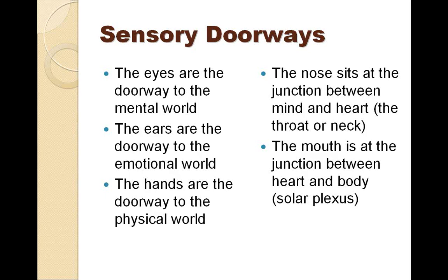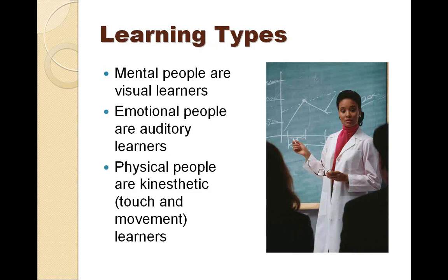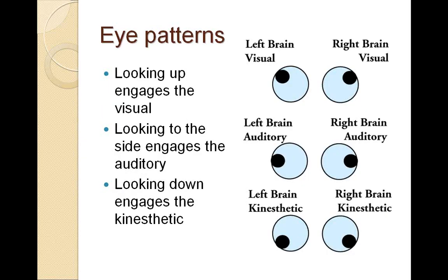You have two eyes, one nose, two ears, one mouth, and two hands — that pattern is the pattern of the tree of life. The eyes are the doorway to the mental world, the ears to the emotional world, and the hands to the physical world. The nose sits at the junction between the mind and the heart, which relates to the throat or neck. The mouth is the junction between the heart and the body, which is the solar plexus. There are also three major learning types: people who tend to be more mental tend to be visual learners with an attitude of 'show me.' People who are more emotional tend to be auditory learners who learn best by hearing. And then there are kinesthetic people who learn by touch and movement.